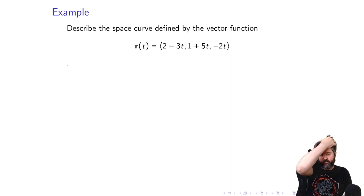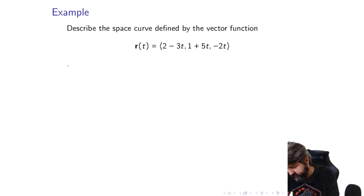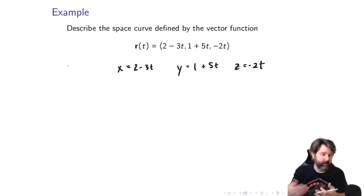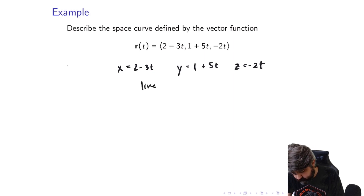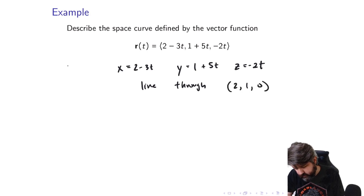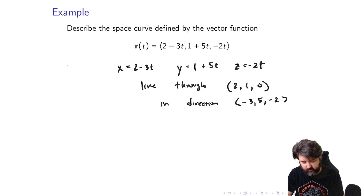Describe the space curve defined by R of T equals (2 minus 3T, 1 plus 5T, negative 2T). This is just a line. The space curve can be written as X equals 2 minus 3T, Y equals 1 plus 5T, Z equals negative 2T — the parametric equations of a line through the point (2, 1, 0) in the direction (negative 3, 5, negative 2). The constant terms give the point, and the coefficients of T give the direction numbers.